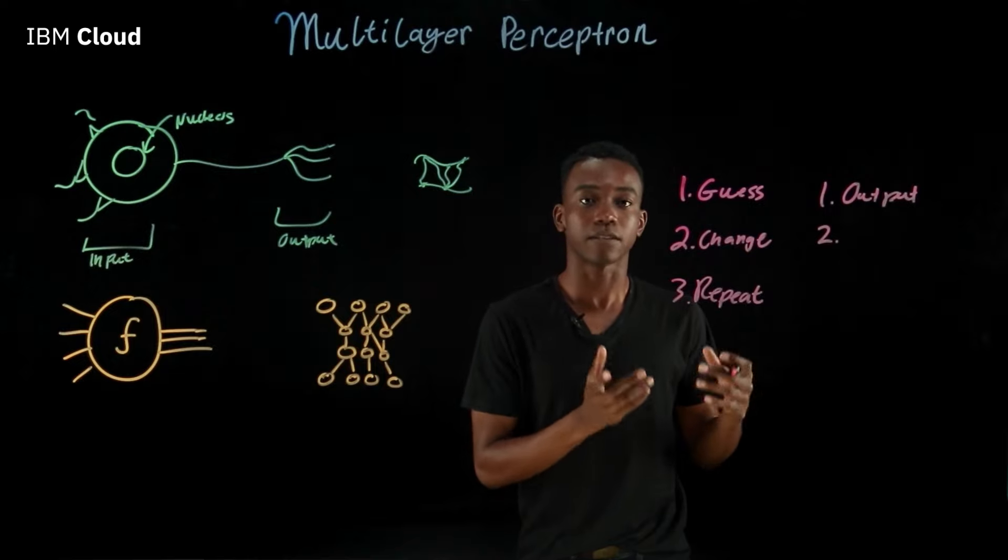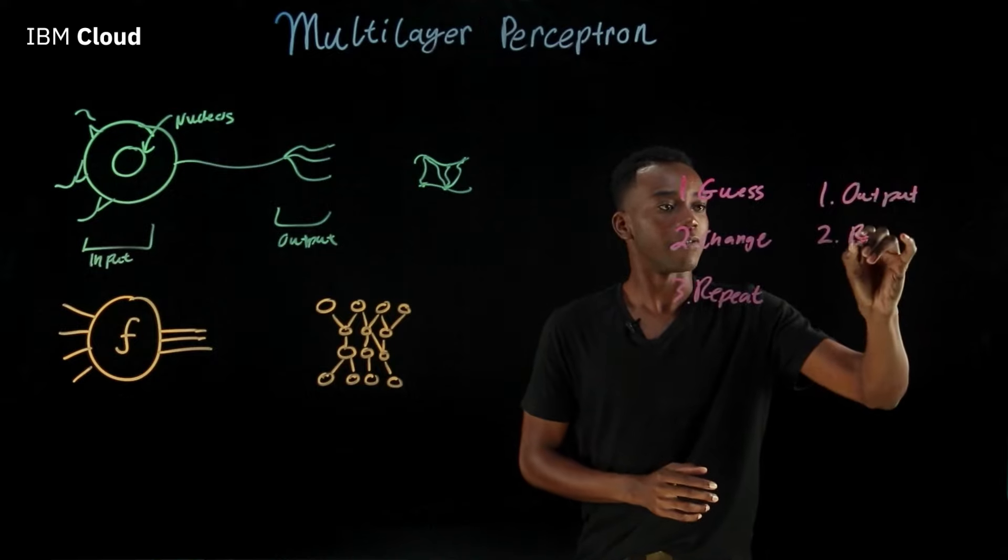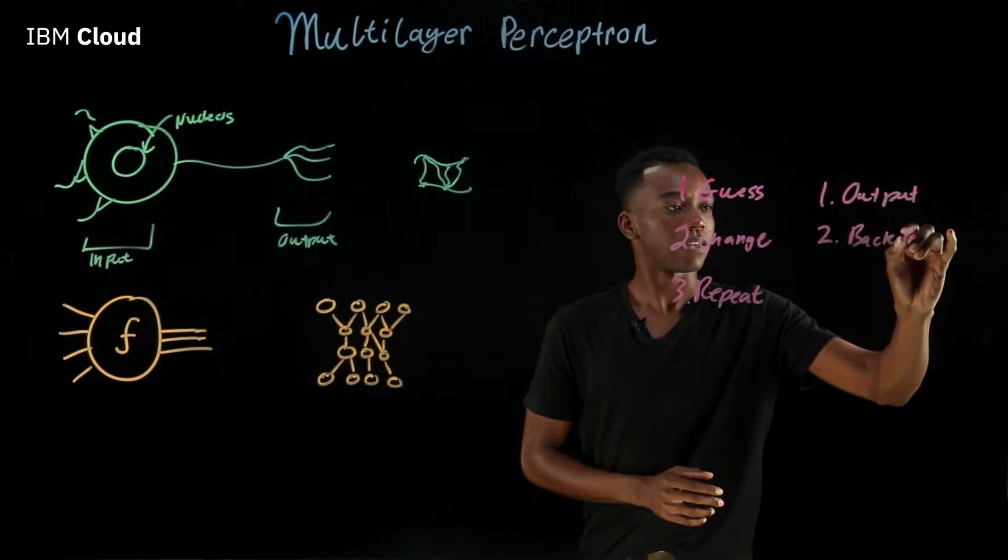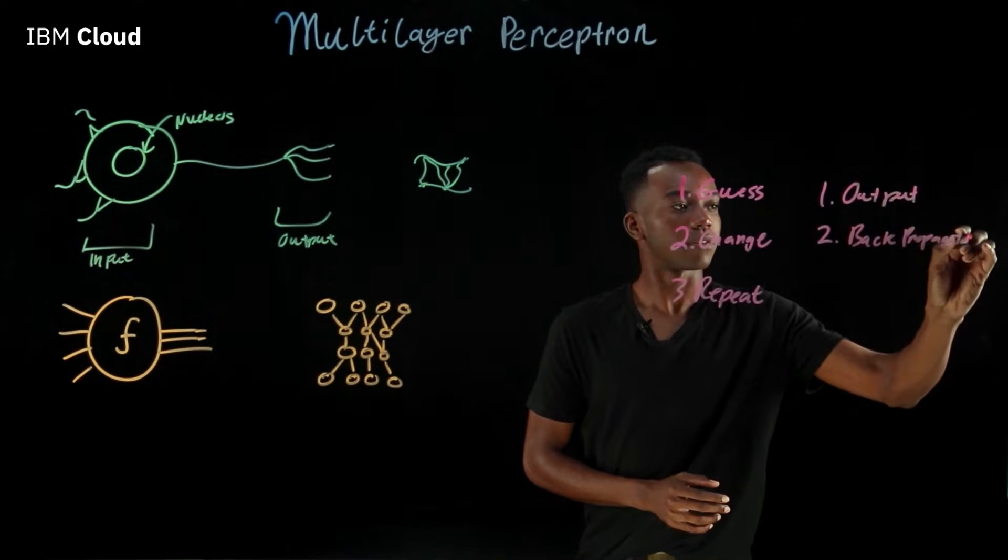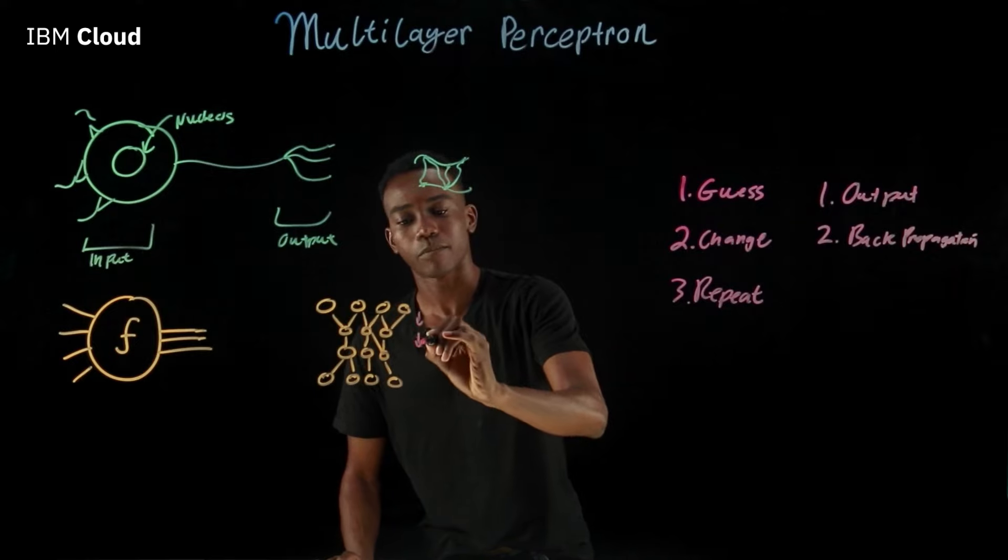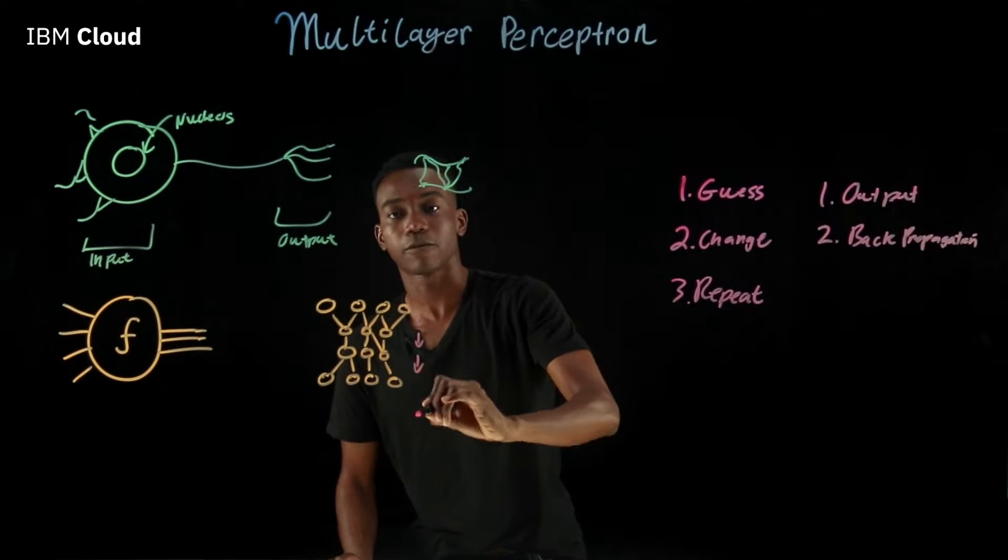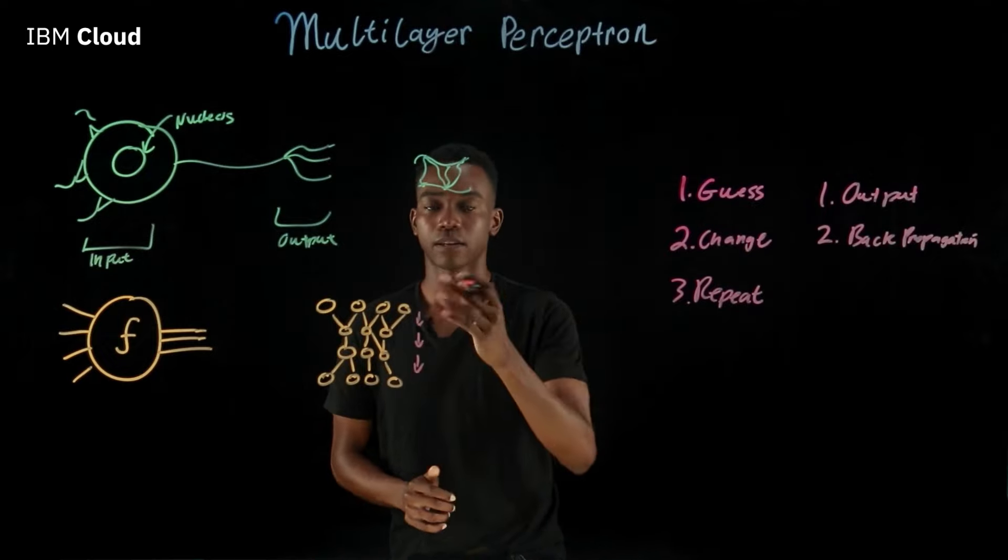The changing process is something called backpropagation. Long word, I know. But very simply, it just means that the multilayer perceptron has to go back through its layers and improve itself all the way down to the input so that the next output is better.